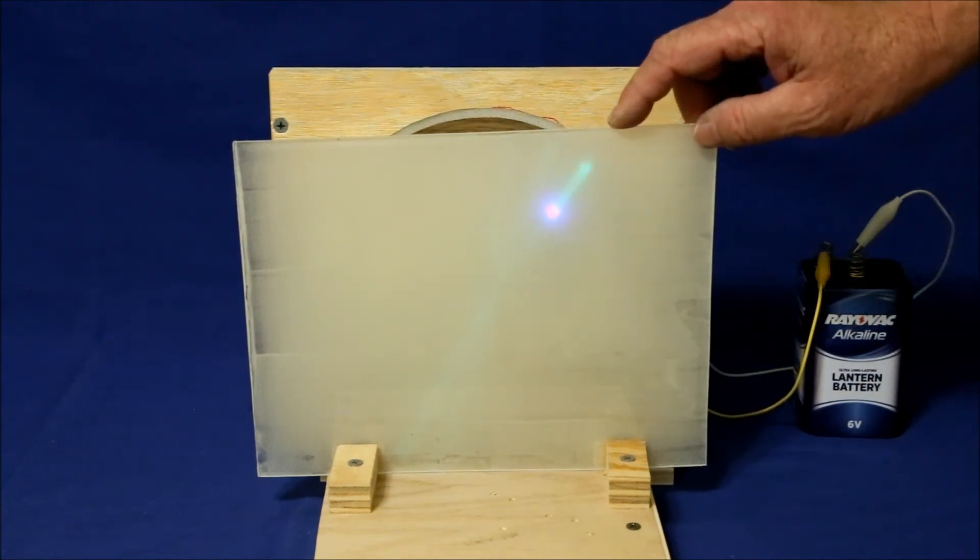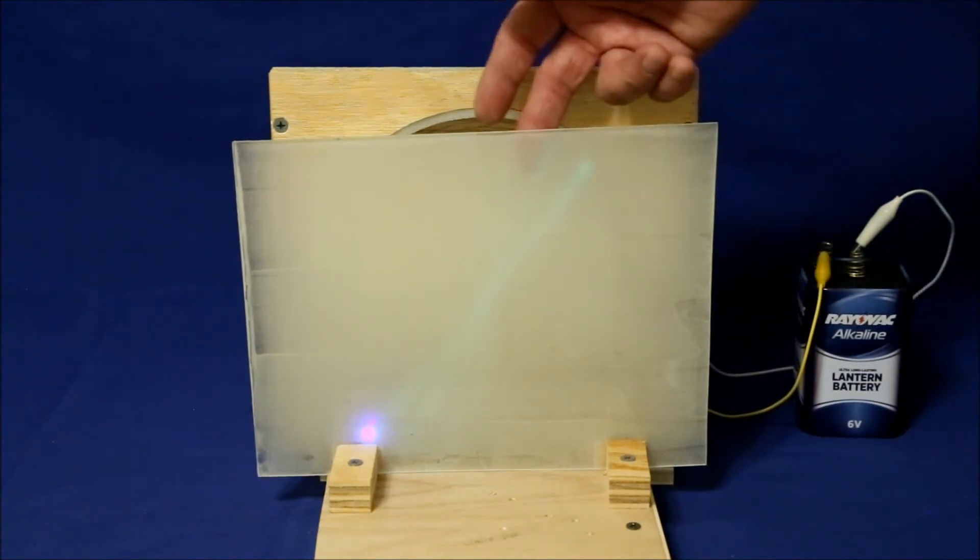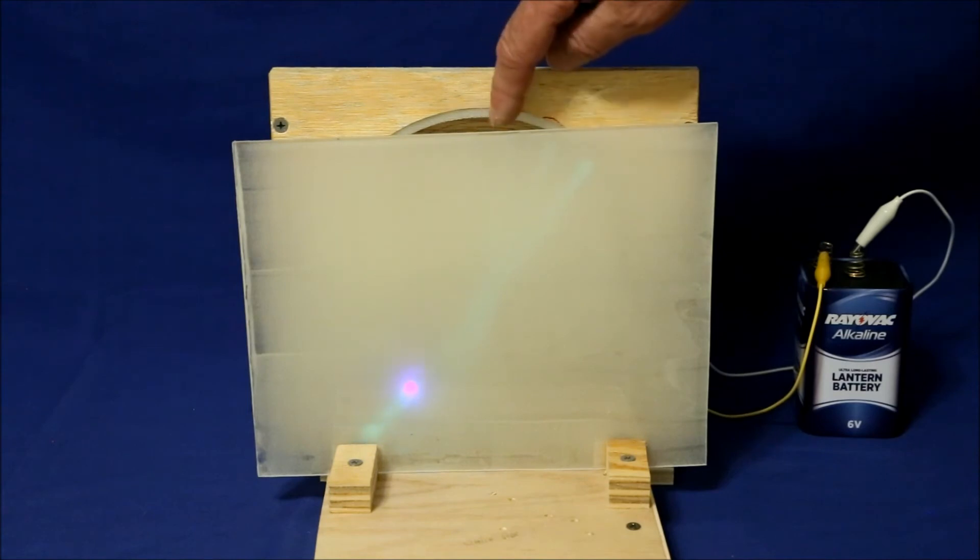Even though it's clear, the plexiglass blocks much of the UV needed to excite the paint. So the painted side needs to be on the same side as the light.